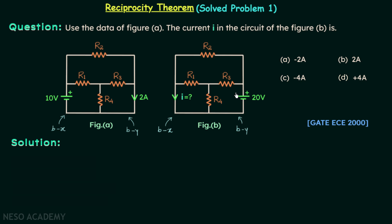And branch x is having the response. So we are interchanging the positions of response and excitation. This means we can use reciprocity theorem.